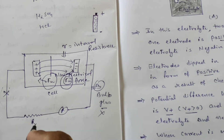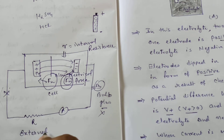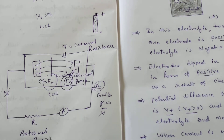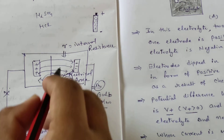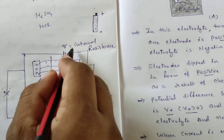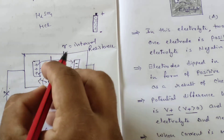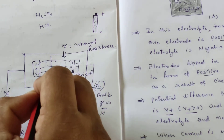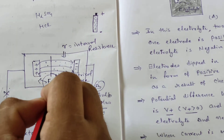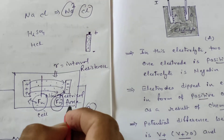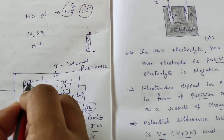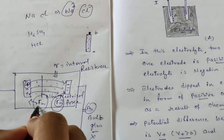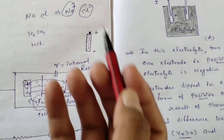External resistance is indicated as capital R and is called external resistance because it is placed outside. Internal resistance is produced inside — the material offers resistance. The charges experience more resistance from the non-electrical force.